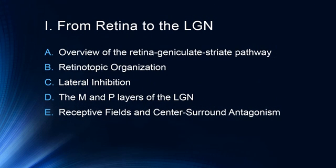To start, we're going to give an overview of the retina-geniculate-striate pathway. This is the pathway that goes from the retina to the lateral geniculate nucleus to the striate cortex, or the primary visual cortex, in the occipital lobe. We'll talk about how along this pathway it exhibits a retinotopic organization.